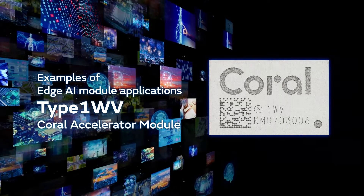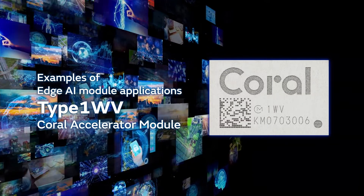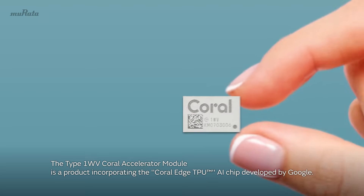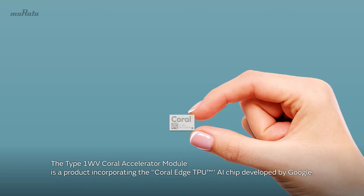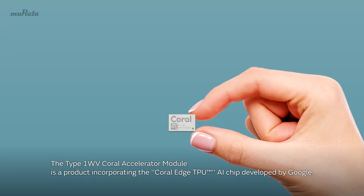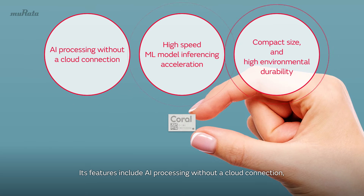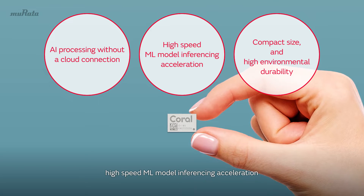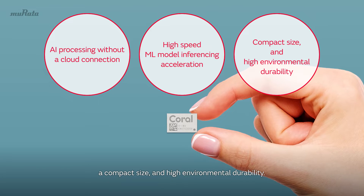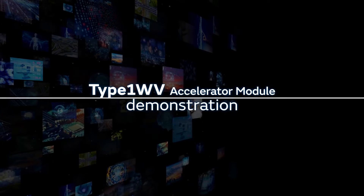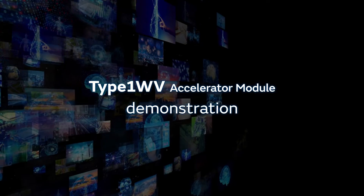Examples of edge AI module applications: Type 1 WV Coral Accelerator Module. The Type 1 WV Coral Accelerator Module is a product incorporating the Coral Edge TPU AI chip developed by Google. Its features include AI processing without a cloud connection, high-speed ML model inferencing acceleration, a compact size, and high environmental durability.